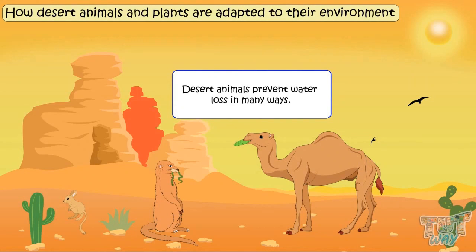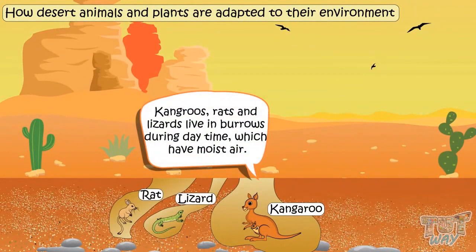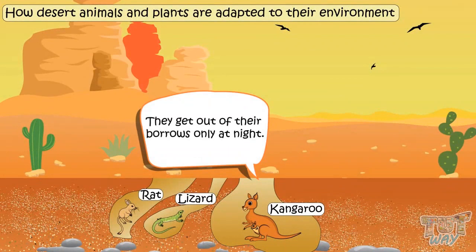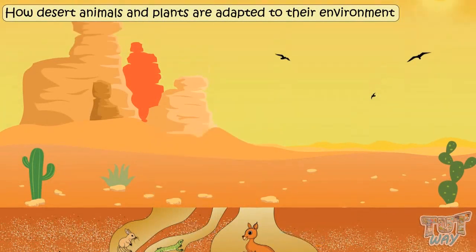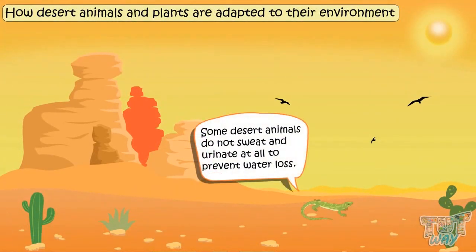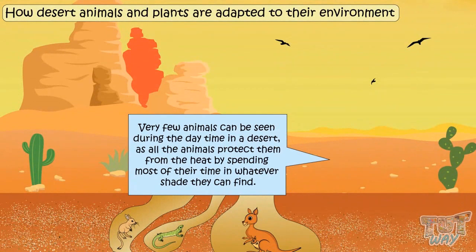Desert animals prevent water loss in many ways. Desert animals like kangaroo rats and lizards live in burrows at daytime which have moist air, and they get out only at night. It's a way to protect themselves from heat and prevent water loss from their body. Some desert animals do not sweat or urinate in hot weather to prevent water loss. Very few animals can be seen in the desert at daytime, as most spend their time in whatever shade they can find.